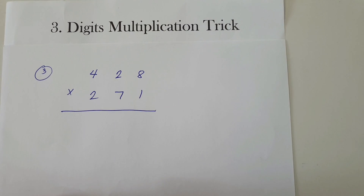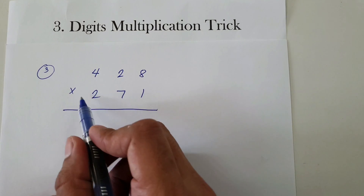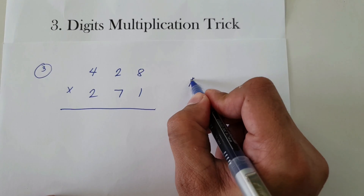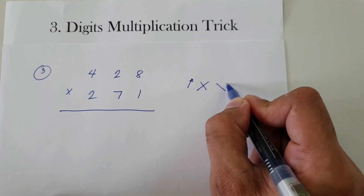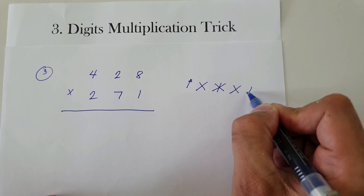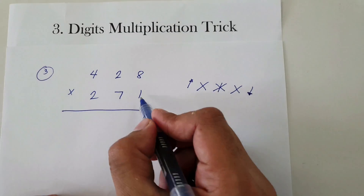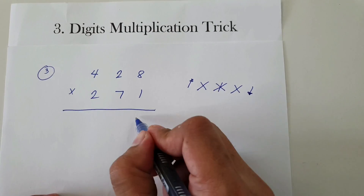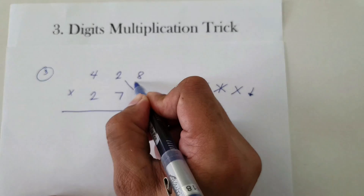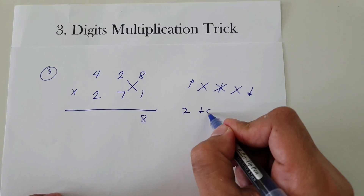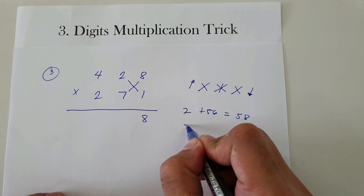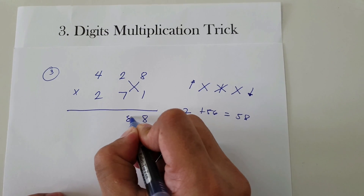For our last example, we have 428 times 271. Again, we're going to use the technique of up, cross, crossbar, cross, and down. Down: 8 times 1 is 8. We have 8. Cross: 2 times 1 is 2, and 7 times 8 is 56. Adding, that is 58. So we're going to have 5 and carry 8.